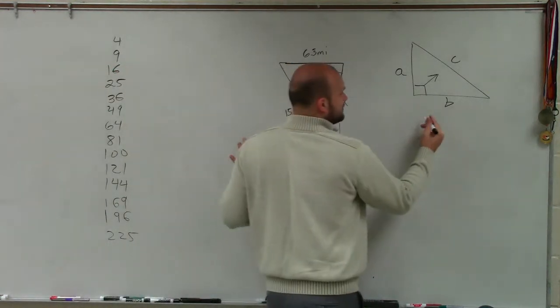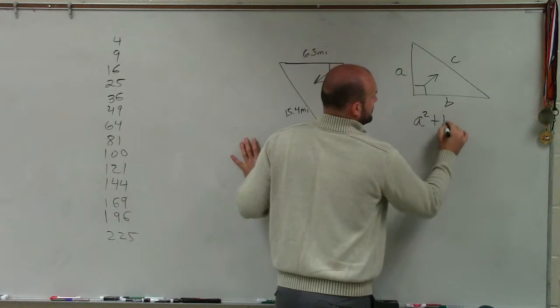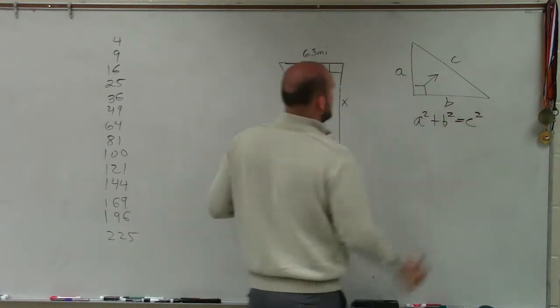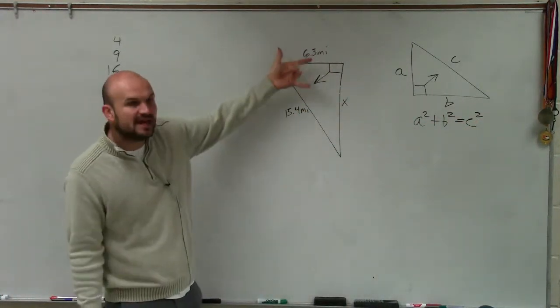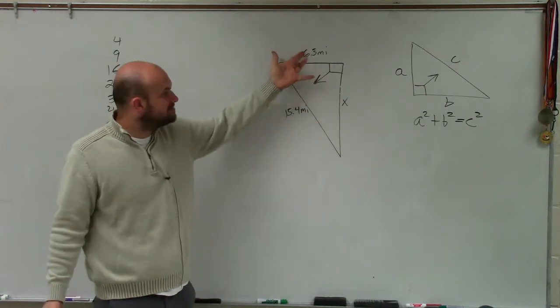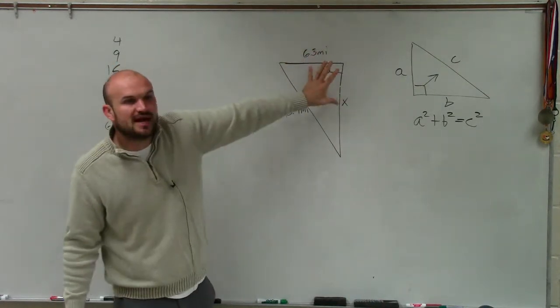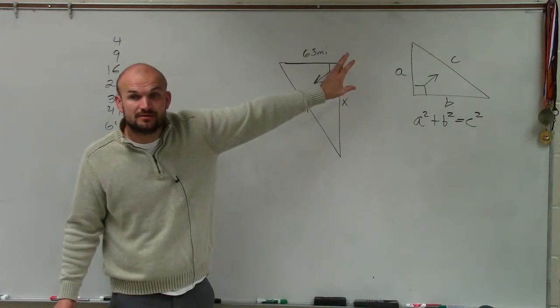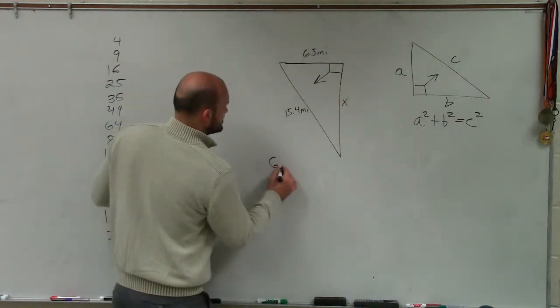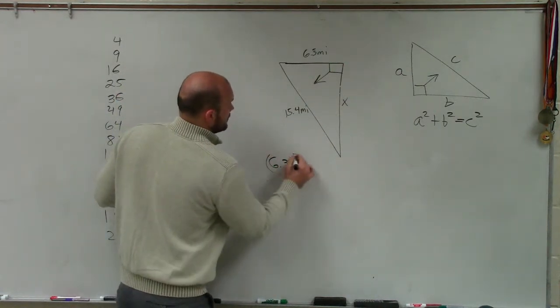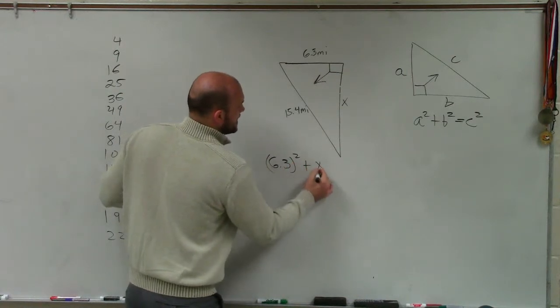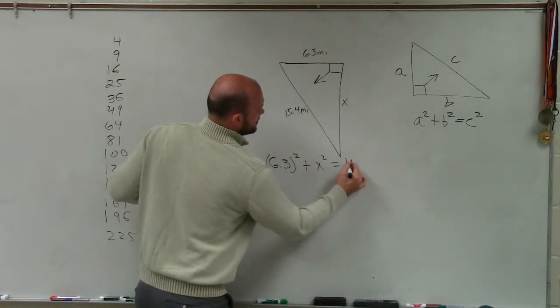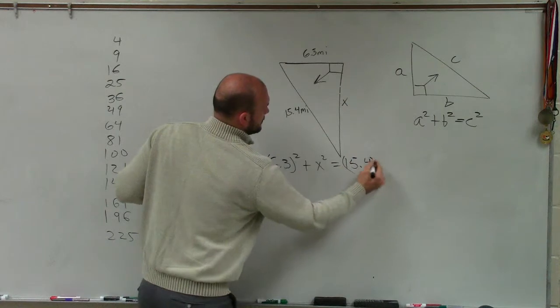So if you guys remember, the Pythagorean Theorem stated A squared plus B squared equals C squared. So in this case, what I want to do is determine, well, what is my A and my B? And you can see that these two sides are what create the 90 degree angle. So I can say 6.3 squared plus x squared equals 15.4 squared. Does everybody see that?